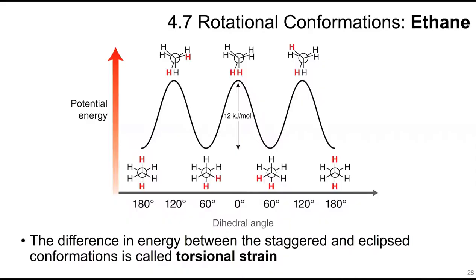The energy difference between staggered and eclipsed conformations is called torsional strain. As you rotate the ethane molecule, it fluctuates between staggered, eclipsed, staggered, eclipsed — with a difference of 12 kilojoules per mole between them.